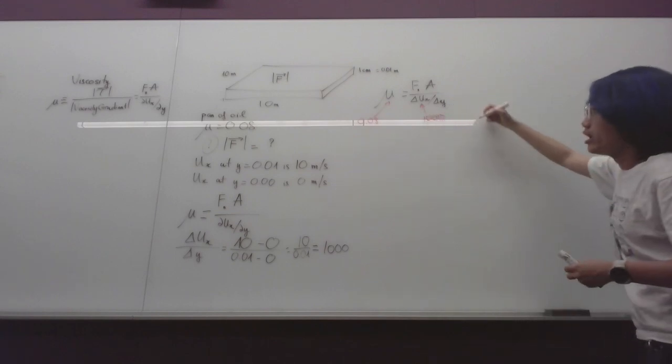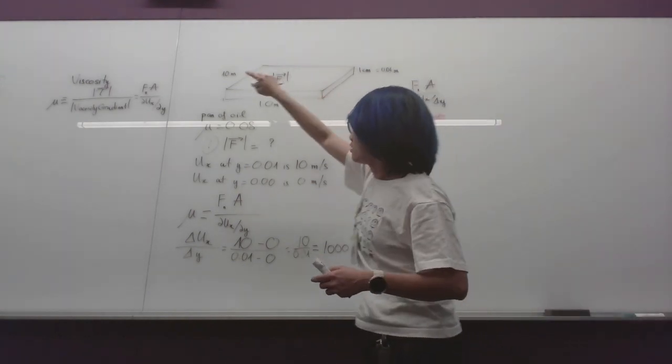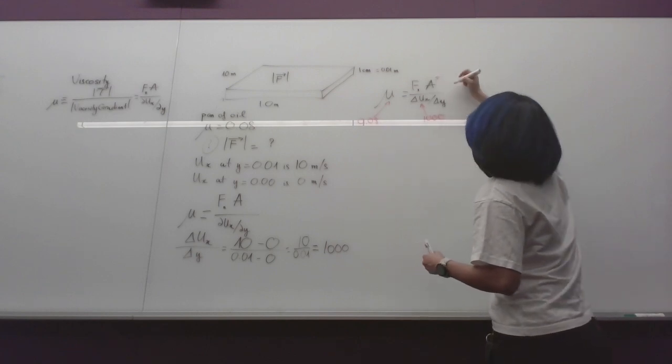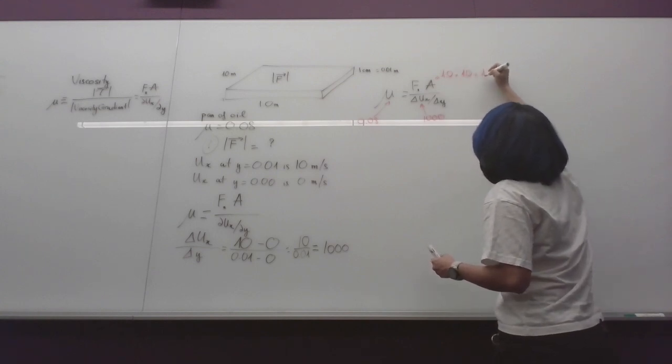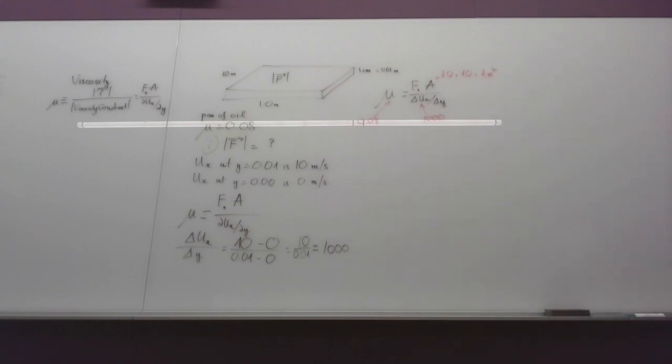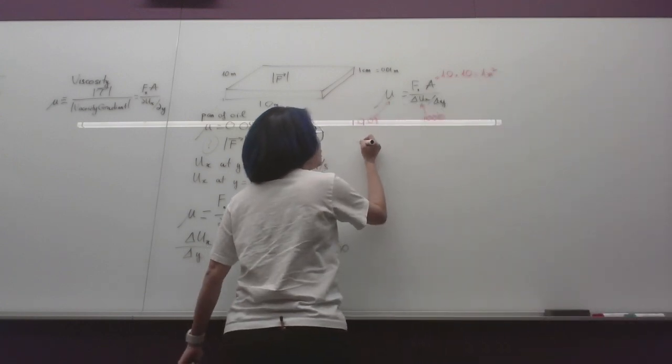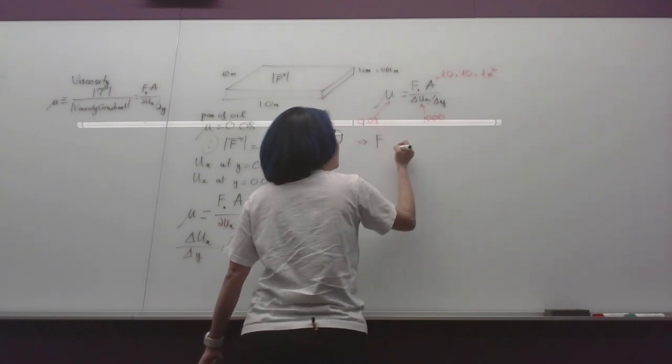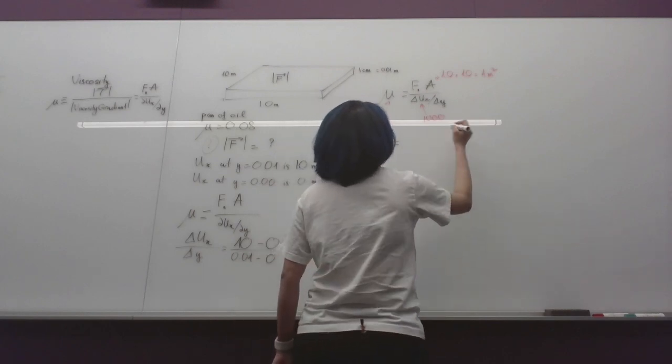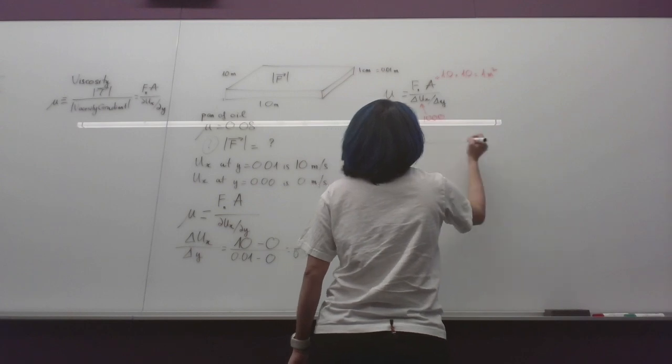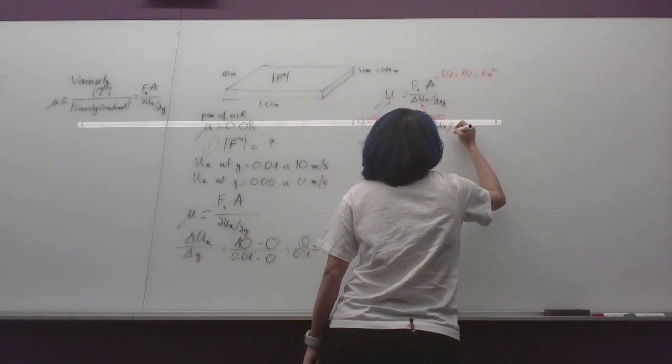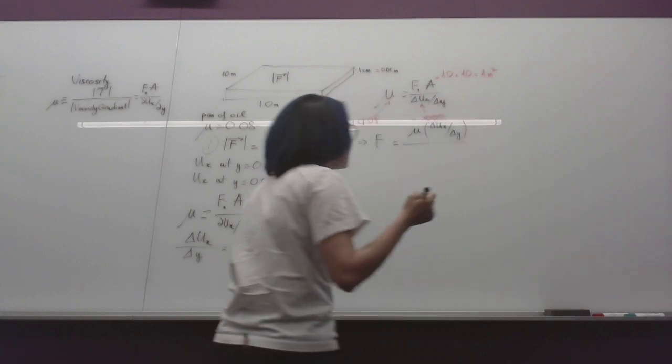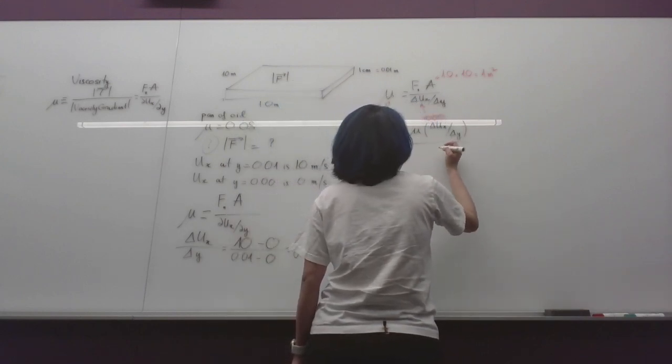The area here is the area of the pan which is 1 meter by 1 meter, so this is 1 meter squared. Plugging into this formula we will have F equal to μ multiplied by the rate of change of ux divided by the area.